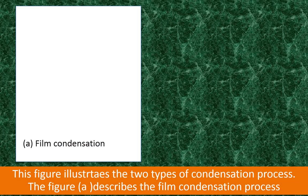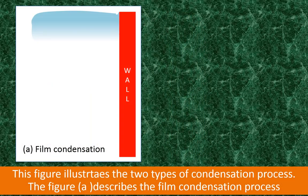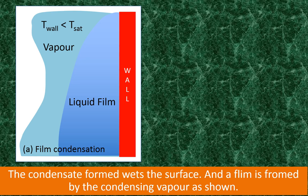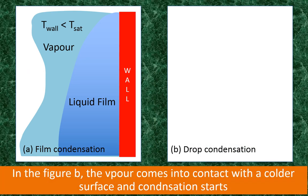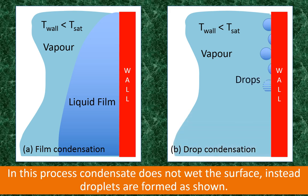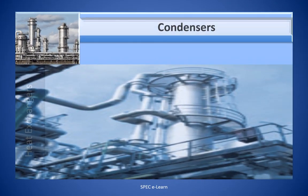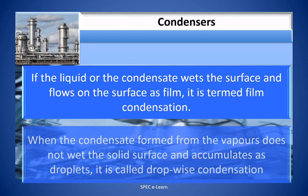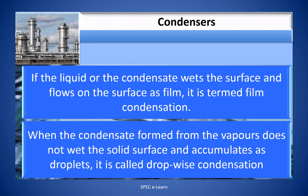This figure illustrates the two types of condensation processes. In film condensation, the vapor coming into contact with the colder heat transfer surface condenses, the condensate wets the surface, and a film is formed by the condensing vapor. In drop-wise condensation, the vapor comes into contact with the colder surface and condensation starts, but the condensate does not wet the surface — instead, droplets are formed. If the condensate wets the surface and flows as a film, it is termed film condensation; when it accumulates as droplets, it is called drop-wise condensation.